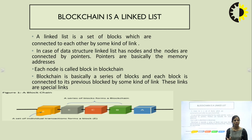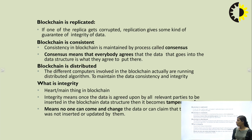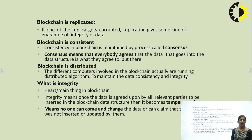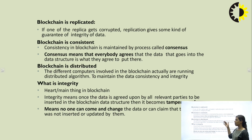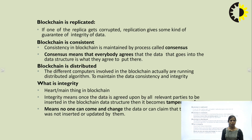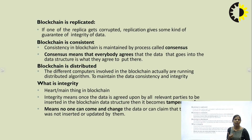Blockchain is replicated — if a copy gets corrupted, it guarantees the integrity of the data. Integrity means once data is agreed upon, no one can come and change it — the consistency and integrity of the data must be maintained. The terms used in blockchain technology are: replicated, consistent, distributed, and integrity. Replicated means it guarantees and maintains the integrity of the data.